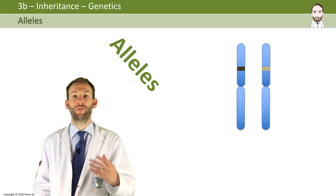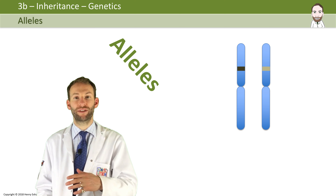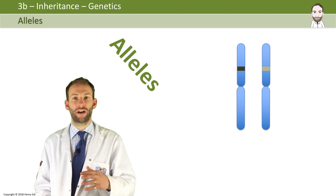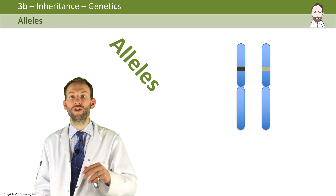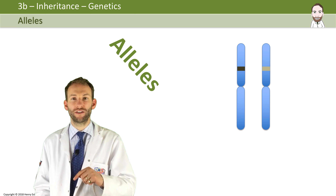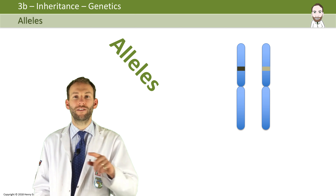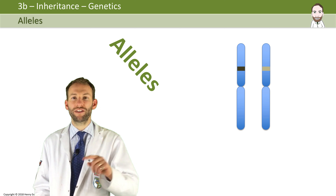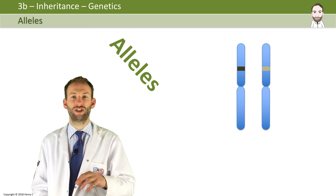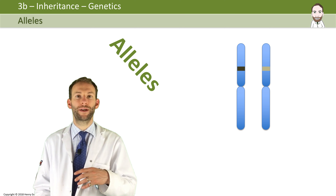So for example, here are a pair of chromosomes, maybe pair number seven, one from the mother and one from the father, and they're showing two different alleles. The genes are in the same position — those little darker lines shown on the chromosomes — but you can see they're slightly different versions of that gene. So they're what we call alleles, different alleles.